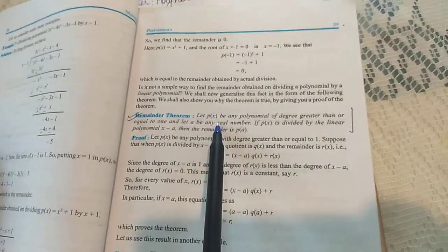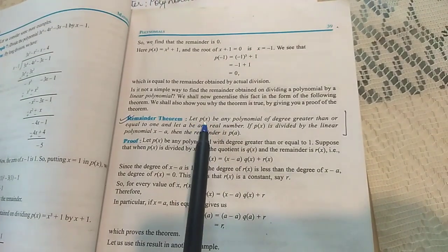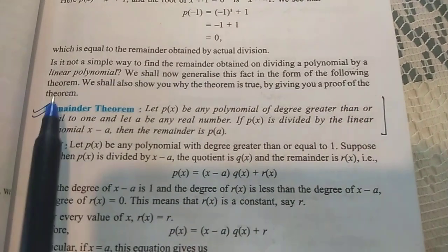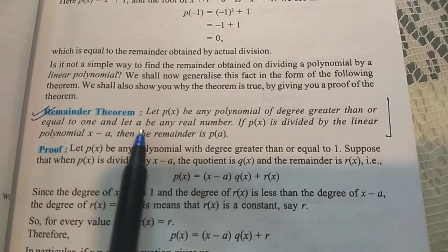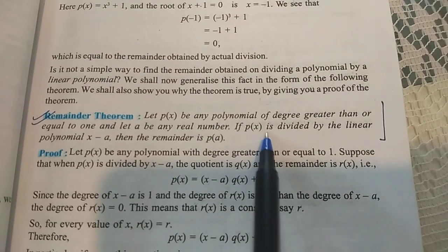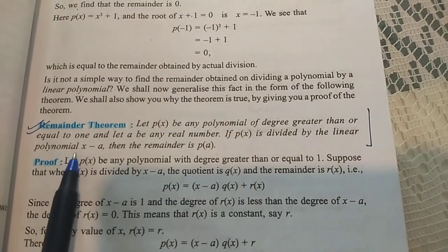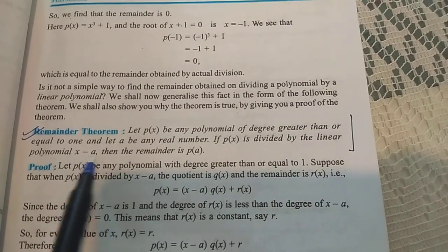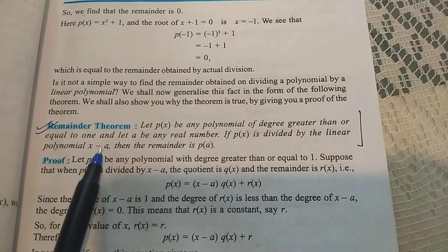Now from the book let us read the statement. It says that let p(x) be any polynomial whose degree is greater than or equal to 1, and a is any real number. Then if p(x) is divided by a linear polynomial of the type x - a, here a is a real number. You know real number means it could be a rational or an irrational number.